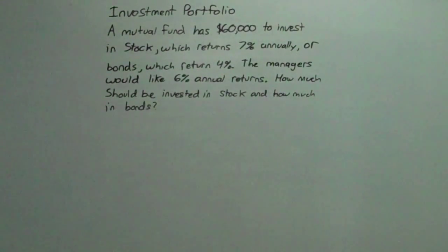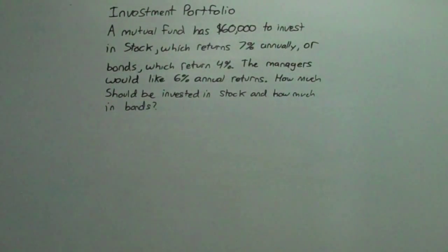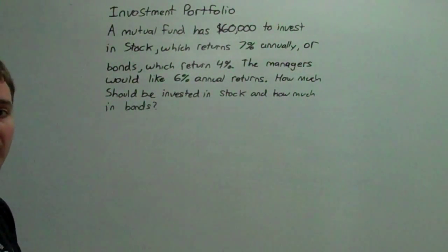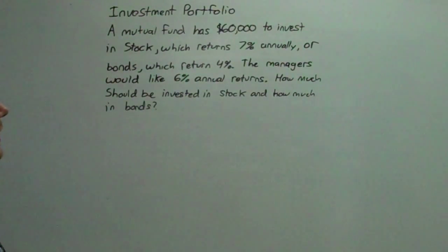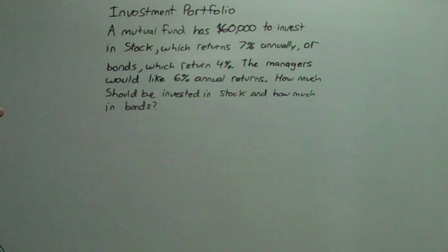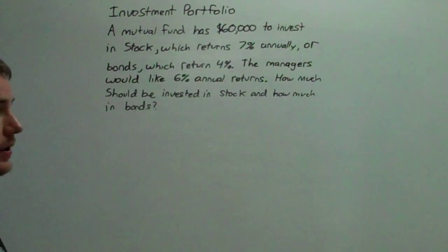All right, for our next word problem, we have an investment portfolio. A mutual fund has $60,000 to invest in stock with a higher return of 7%, or bonds with a return of 4%. The managers would like 6% in annual returns. How much should be invested in stock, and how much should be in bonds?